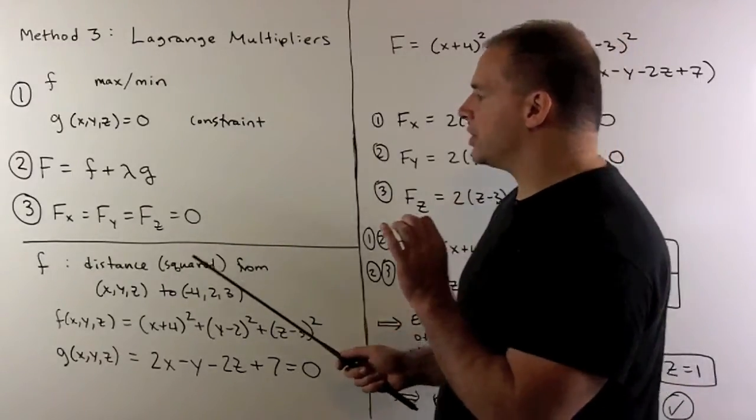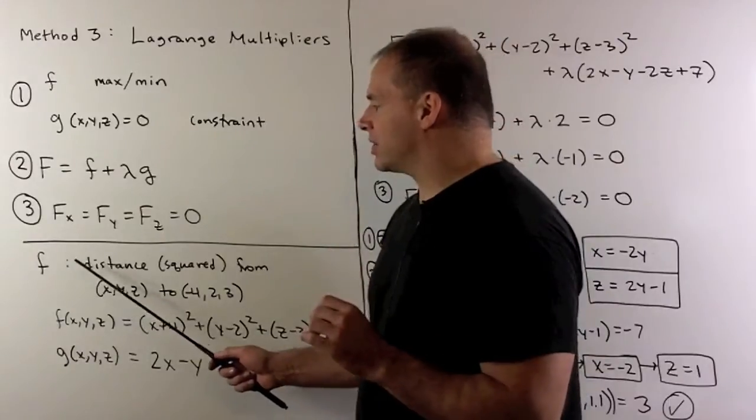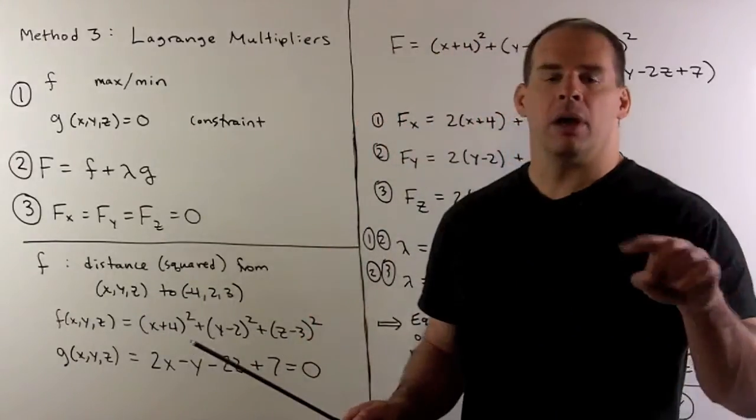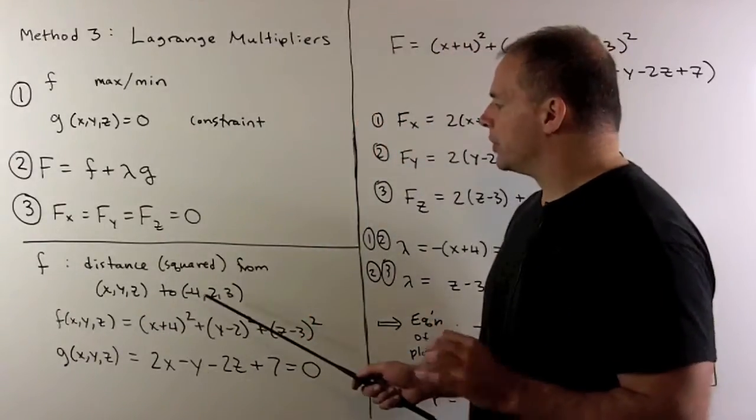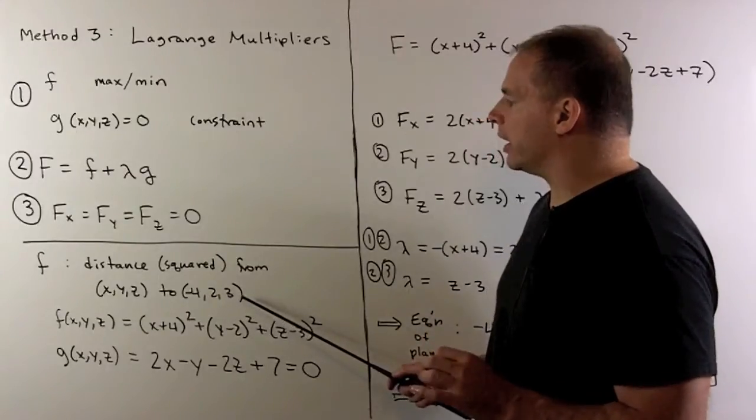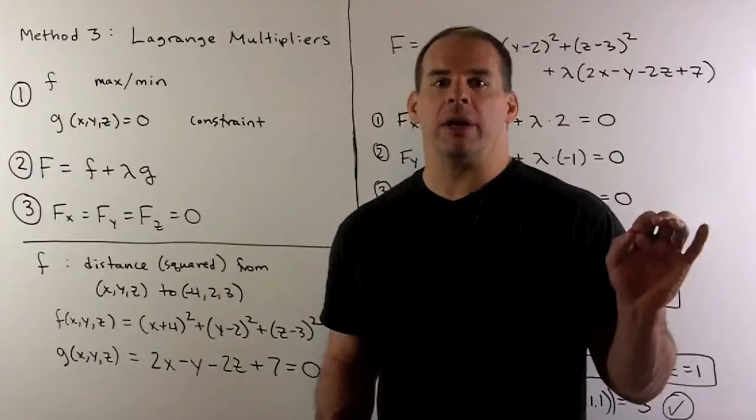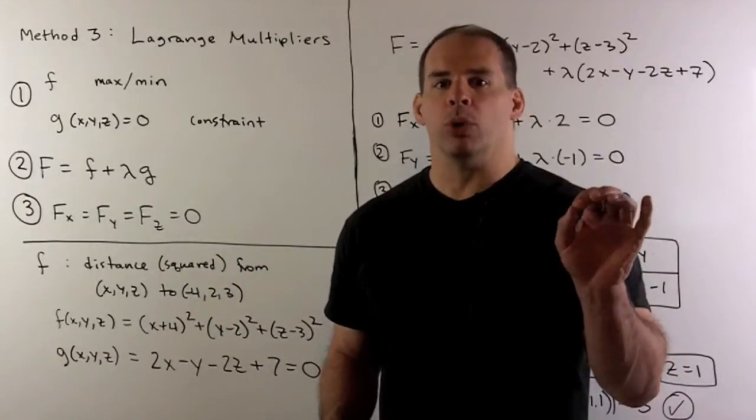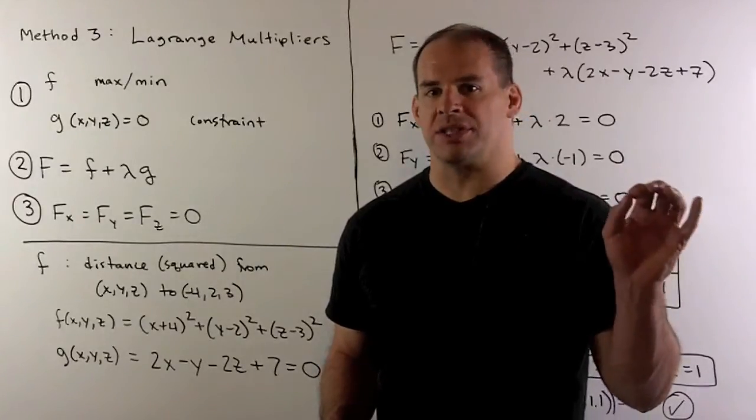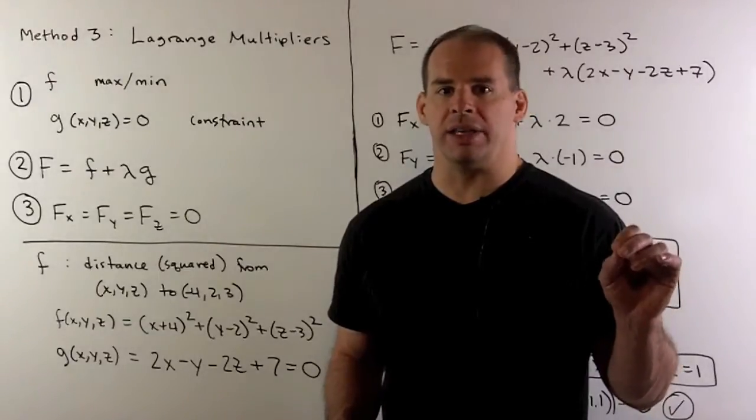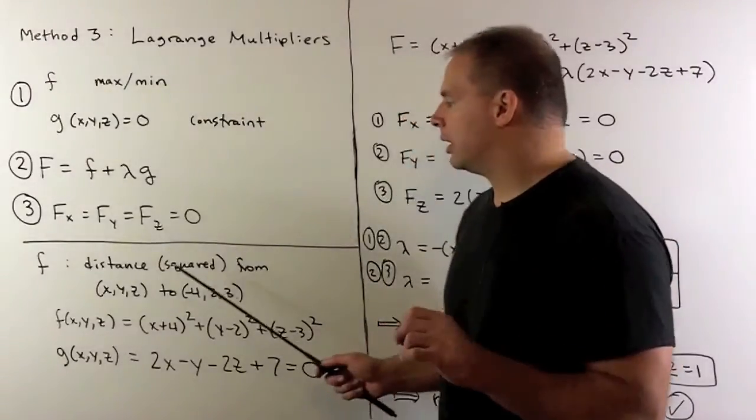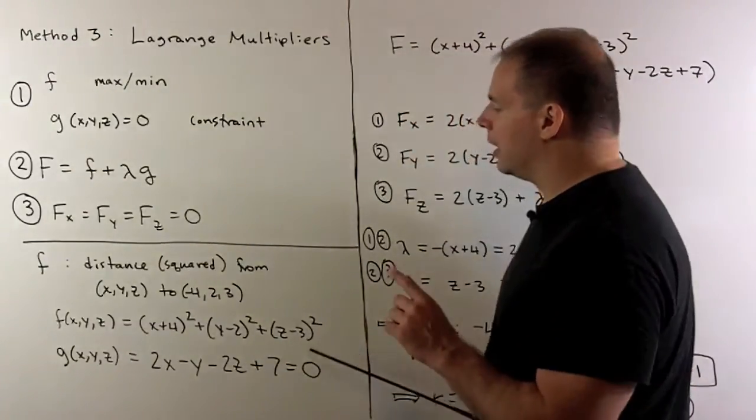Now, in our case, I want to minimize the distance function from point x, y, z to the point minus 4, 2, 3. That function has a square root in it. So, it's a legal move to replace that function with distance squared. That will make our work a lot easier.